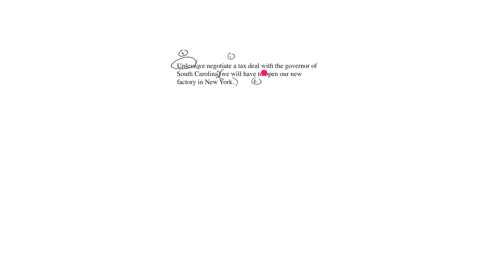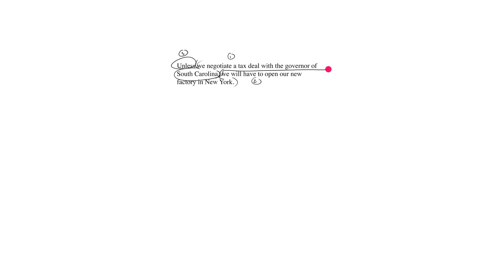Why do I chunk it up like this? Because if you look at the first bit — labeled one — notice it's a complete sentence: 'We negotiate a tax deal with the governor of South Carolina.' Subject, verb, predicate. Look at sentence number two: 'We will have to open our new factory' — also a full and complete sentence. Same with the third. So what 'unless' is doing here grammatically is operating as glue. If you've taken a logic class in college, the technical term is 'connector' — a logical connector, and it's the main logical connector of this claim.